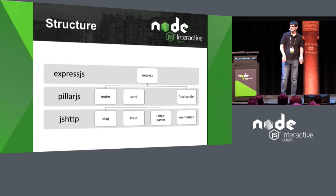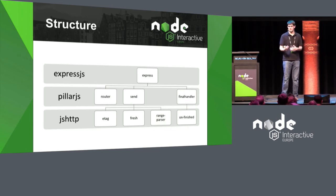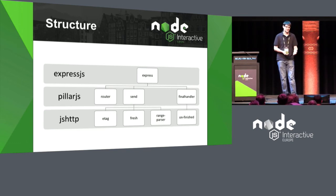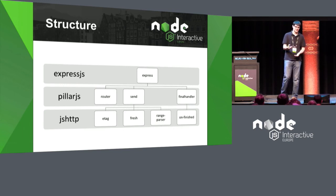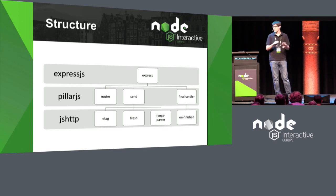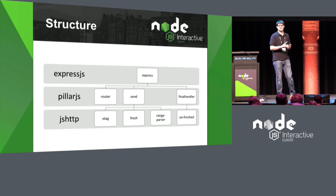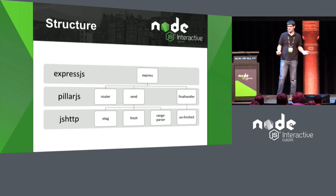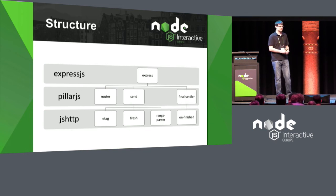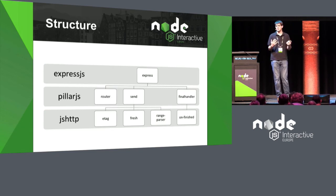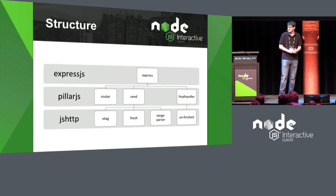Under that you have JS HTTP. The Send module needs to generate ETags and understand if a conditional request will be a 304 or 200 based on whether the cache is fresh — that's the Fresh module. Range Parser parses range headers. Final Handler has a dependency on `on-finished`, so does Send. That's how it hooks into everything to understand when a response is finished so it can clean up file descriptors, even if the client cut the response off. All of this is available for third-party middleware that needs to do similar things — you don't have to reinvent these wheels.